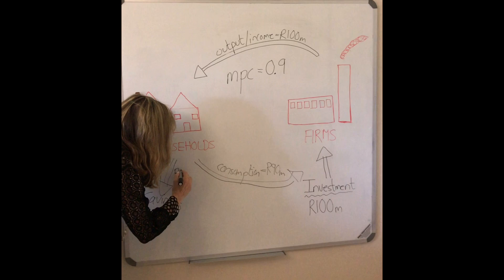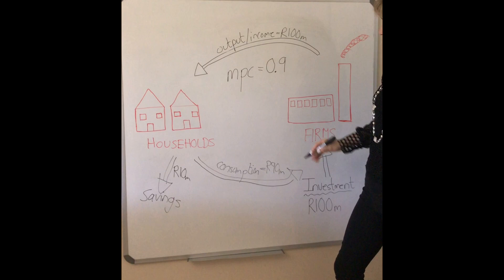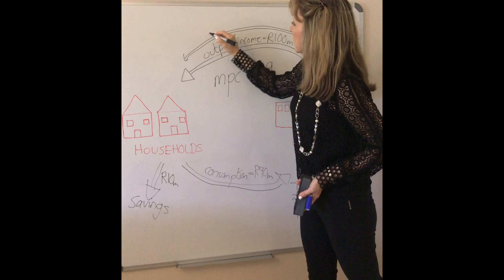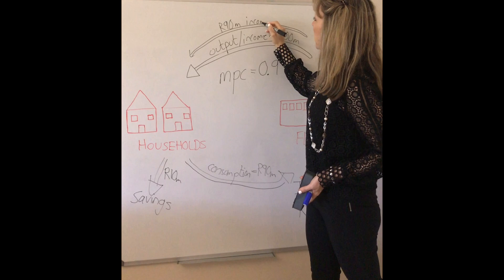90 million spent on consumption expenditure. That will cause firms to increase output again by 90 million which generates a further 90 million rands worth of income or output. You're going to have that 90 million spent, and that then flows back to households.